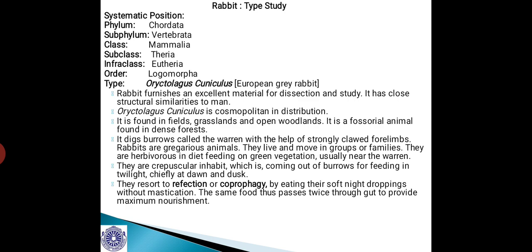Rabbits are crepuscular in habit, meaning they come out of their burrows for feeding in twilight, chiefly at dawn and dusk. Only at these times do they come out of their burrows, what are technically called warrens. Hence they are referred to as crepuscular in habit.